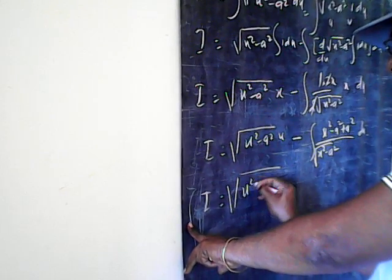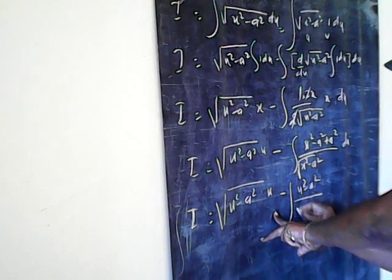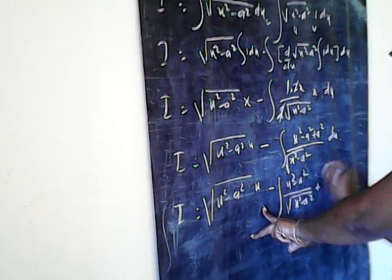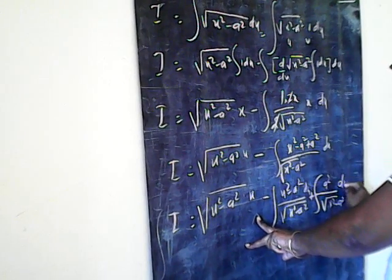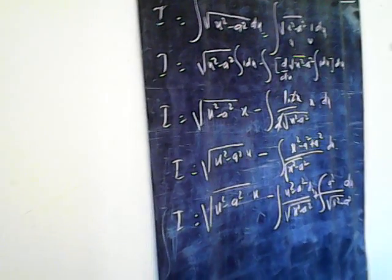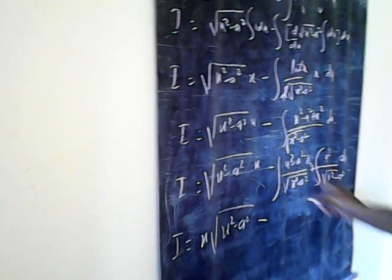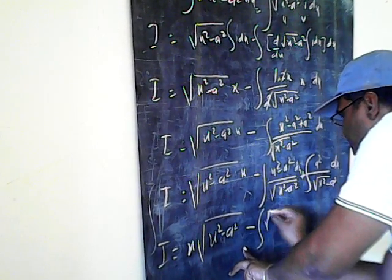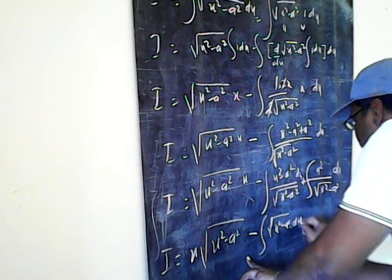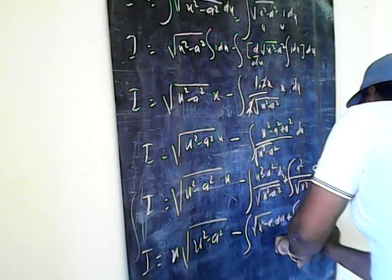Therefore I is equal to under root x square minus a square into x minus. Now we separate: the integration of x square minus a square upon under root x square minus a square, plus the integration of a square upon under root x square minus a square into da. We write I is equal to x into under root x square minus a square, minus one-half times the integration of under root x square minus a square into da, plus the integration of a square upon under root x square minus a square into da.